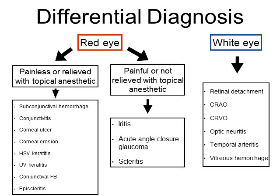The red eye is further subdivided into painless and painful. Under the painless category we consider conditions that are relieved with topical anesthetic usage: subconjunctival hemorrhage, conjunctivitis, corneal ulcer, corneal erosion, HSV keratitis, UV keratitis, conjunctival foreign body, and episcleritis. The painful red eye — pain not relieved with topical anesthetic — includes iritis, acute angle closure glaucoma, and scleritis.